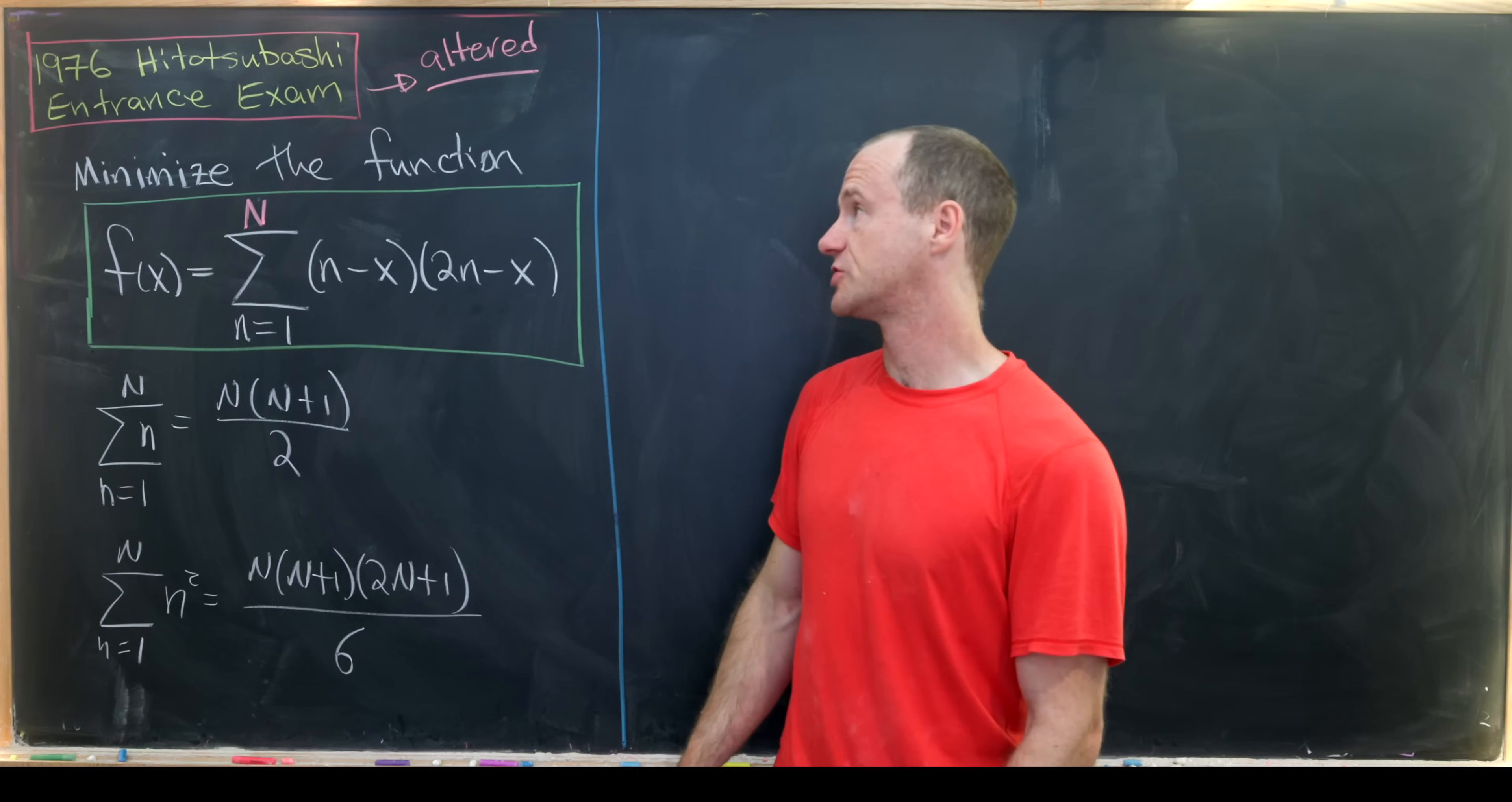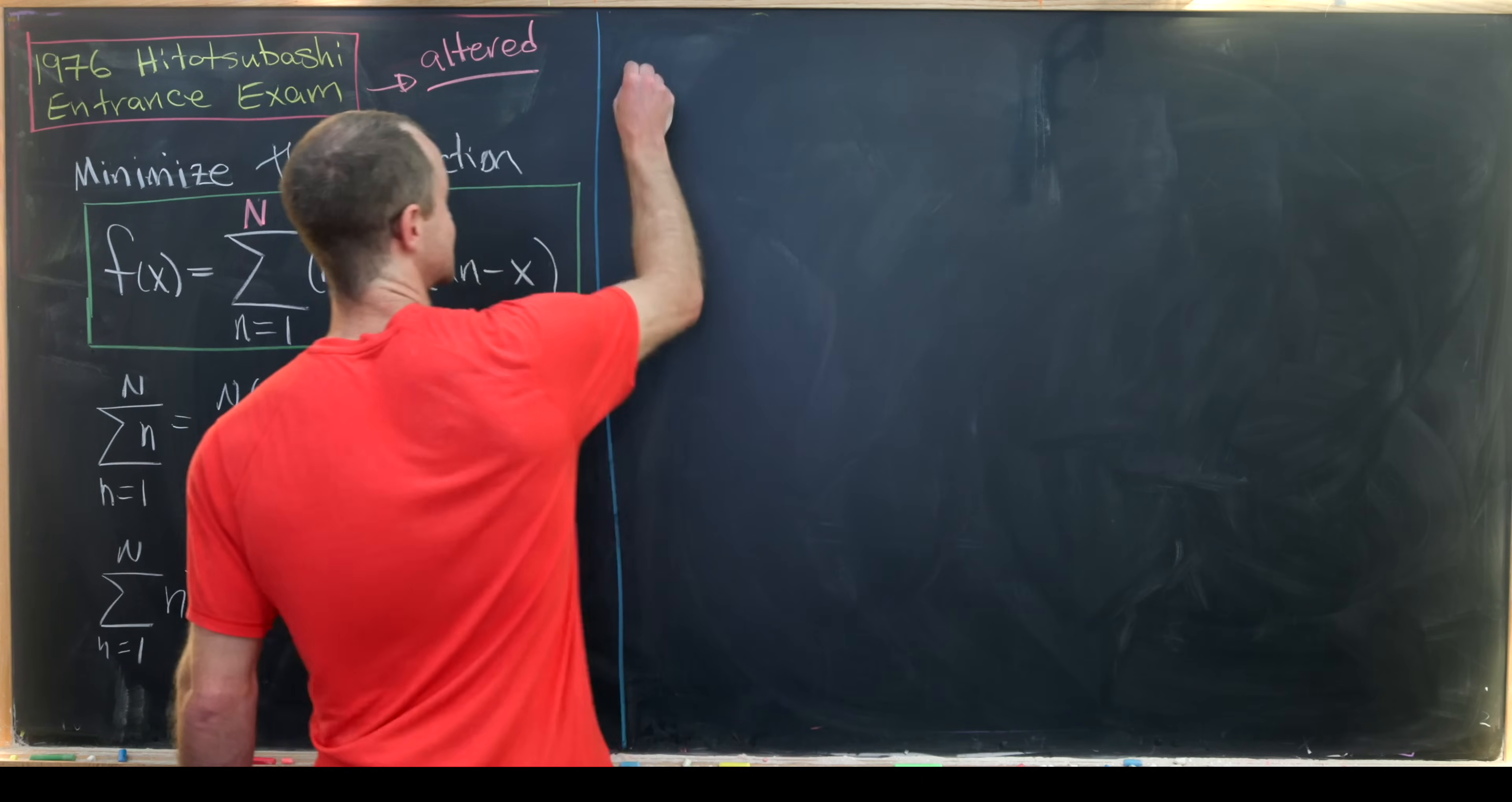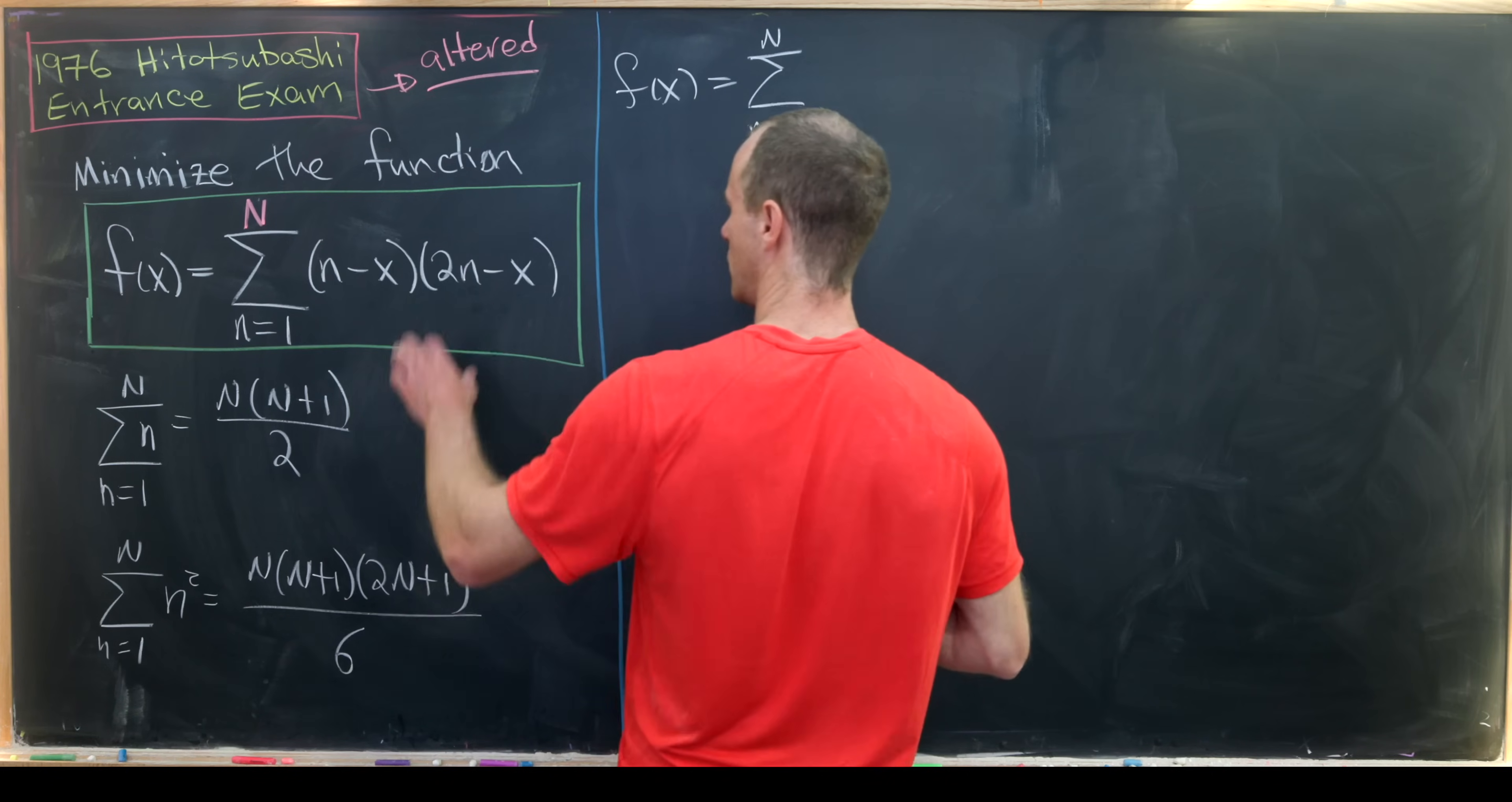So seeing that let's see if we can generalize this a little bit. Now we're going to look at an altered version of this problem where we end at N instead of 11 and see if we get the same sort of structure.